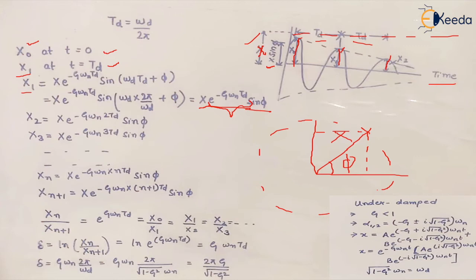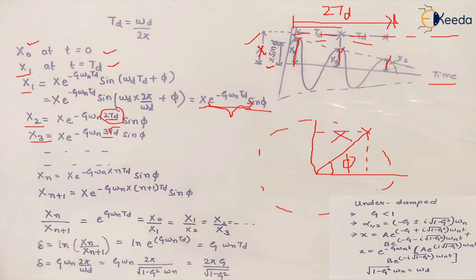With every successive oscillation, the amplitude is decreasing by a factor dependent upon the time period. In going from the maximum value to the next, it takes one period TD per cycle. So for x2 it is 2TD, for x3 it is 3TD, and so on. Therefore, to find the amplitude at xn, the time taken is n·TD.